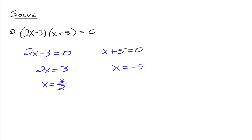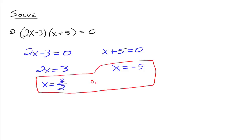Similarly for x equals 3 halves: plugging three halves into 2x minus 3 gives 3 minus 3, which equals zero. And plugging three halves into x plus 5 gives 13 halves. So you have zero times 13 halves, which is equal to zero. Three halves is also a solution. So there are two solutions to this equation: x equals 3 halves or x equals negative 5. This is an example of an equation that has two solutions.